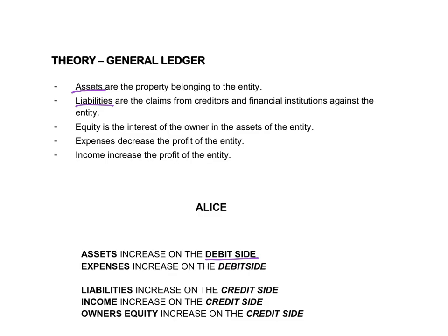Liabilities will increase on the credit side and the balance of a liability is always on the credit side. Equity is the interest of the owner in the assets of the entity — you can say it is the amount of money that the owner invested in the business, or the amount of money that the business owes the owner. Equity will always increase on the credit side and will always have a credit balance in the capital account and a debit balance in the drawings account.